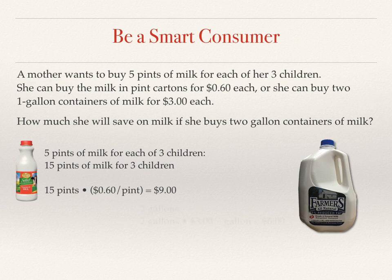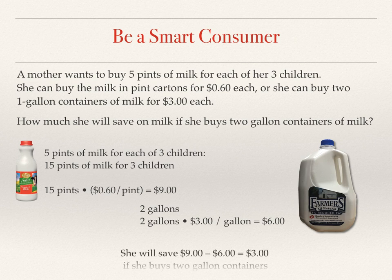If she bought two gallons of milk, each costing $3 per gallon, that would be a total of $6. She would be a smart consumer buying the two-gallon containers. In fact, she would save $3 by buying the two-gallon containers of milk.